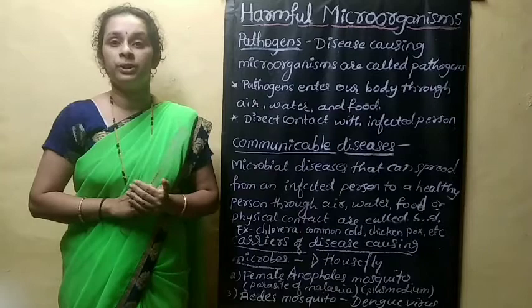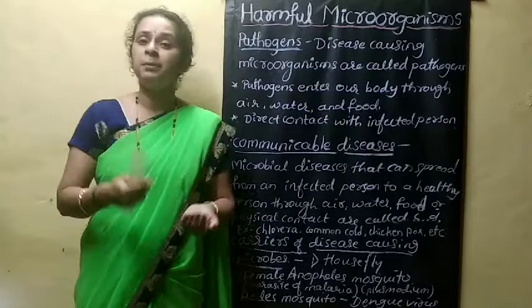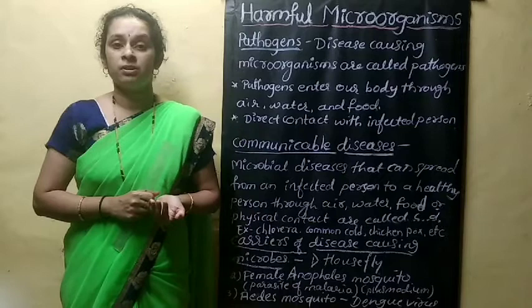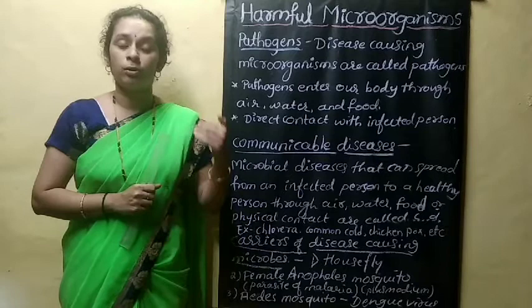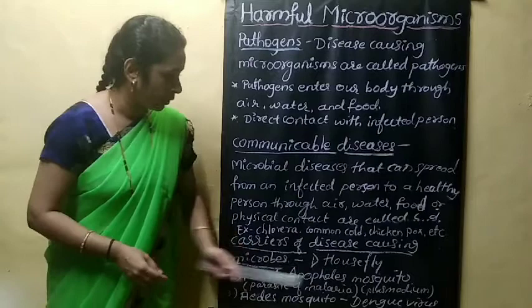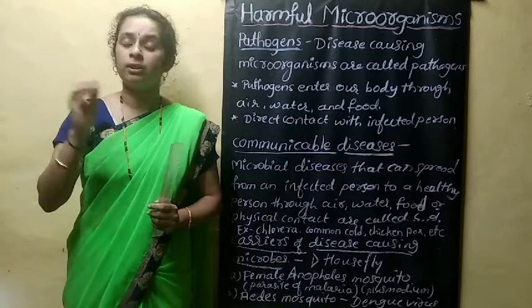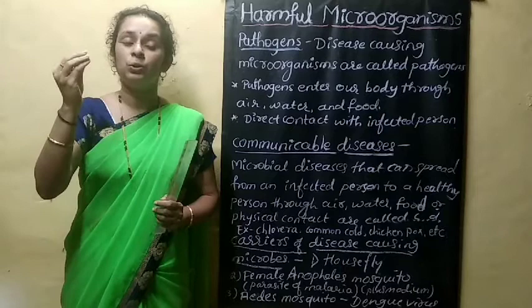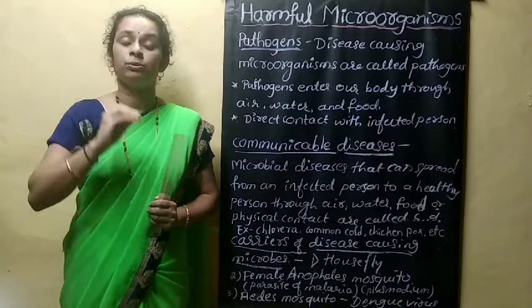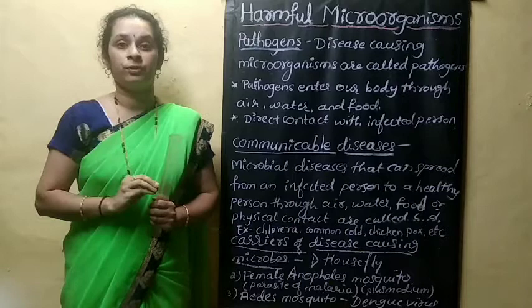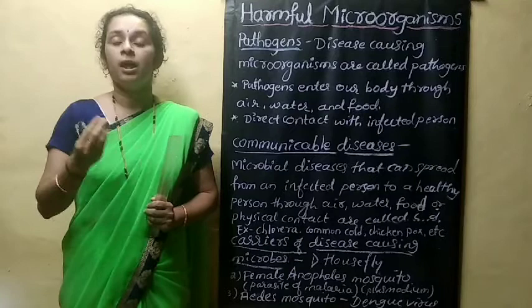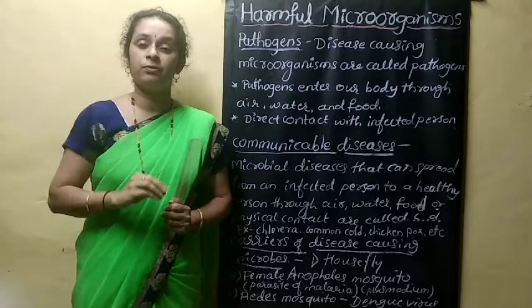Common cold is transferred through air. Some animals and insects are carriers of disease-causing microbes. A very common carrier is the housefly. The housefly sits on animal excreta and garbage, and those disease-causing pathogens stick to its body. When it sits on uncovered food, the pathogens are transferred to that food.